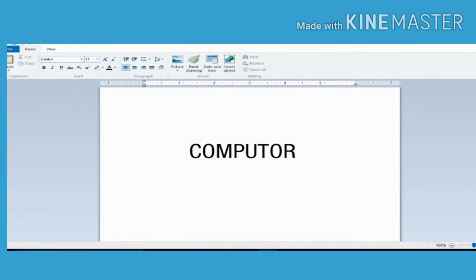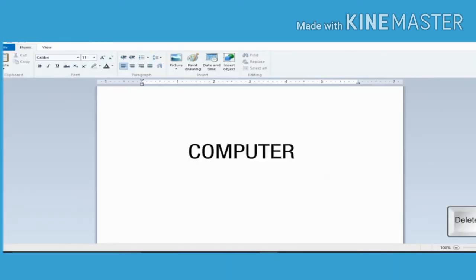Take the cursor just before O and press the delete key to erase, and then type E in this place. You can correct the spelling mistakes. Students, let's read from the book. Delete key erases the character under or to the right of the cursor.